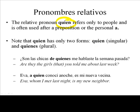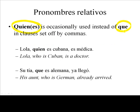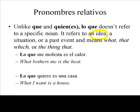We can use quien when we're talking about people. It'll often be used after 'a' with a personal or a preposition. And remember, it's going to be quien or quienes when it's plural. For example: '¿Son las chicas de quienes me hablaste la semana pasada?' Or: 'Eva, a quien conocí anoche, es mi nueva vecina.' We'll often use quien or quienes instead of que and offset it by commas. For example: 'Lola, quien es cubana, es médica.' Either is acceptable. However, quien puts a little more emphasis on the fact that it is a person that we're talking about.